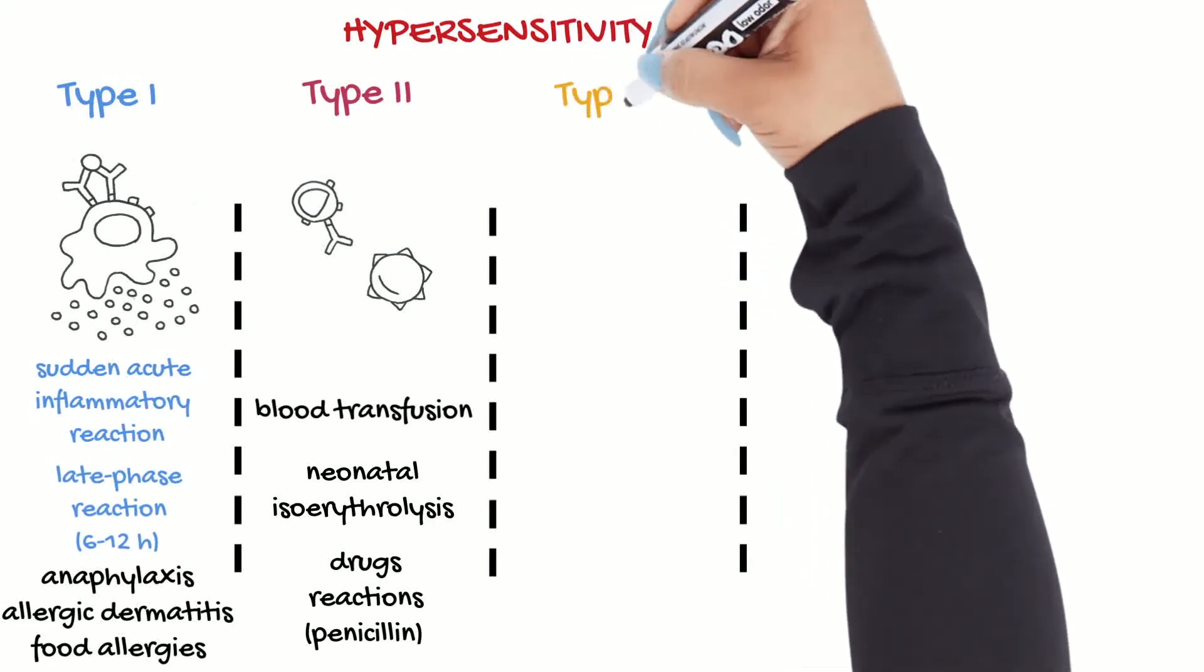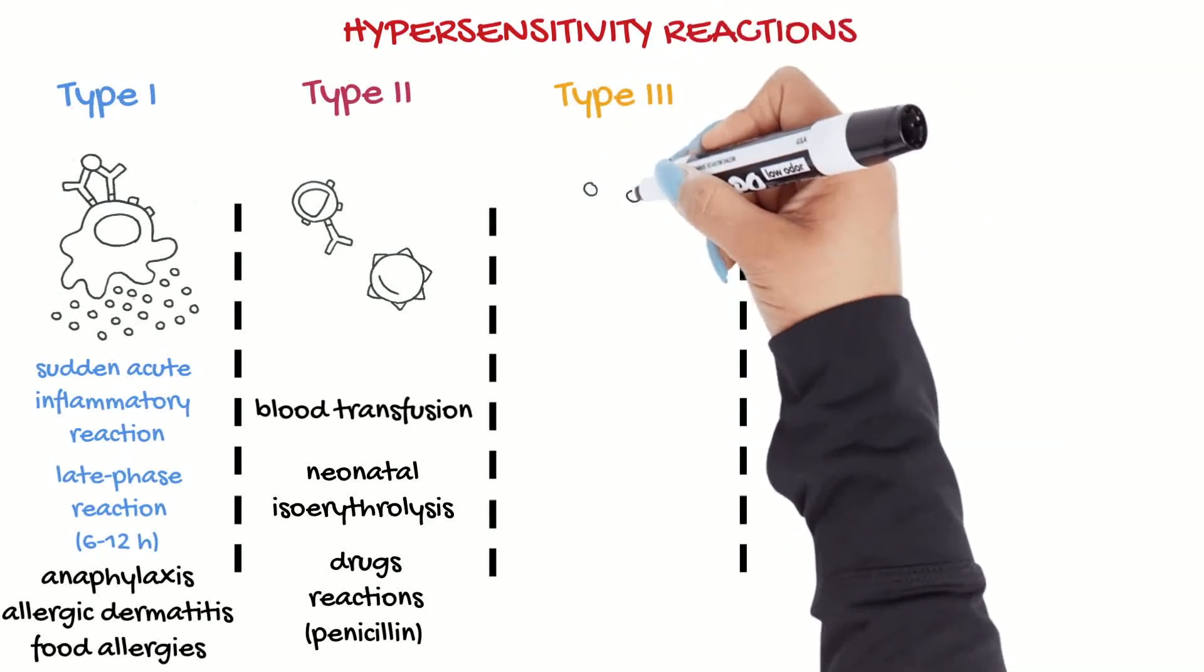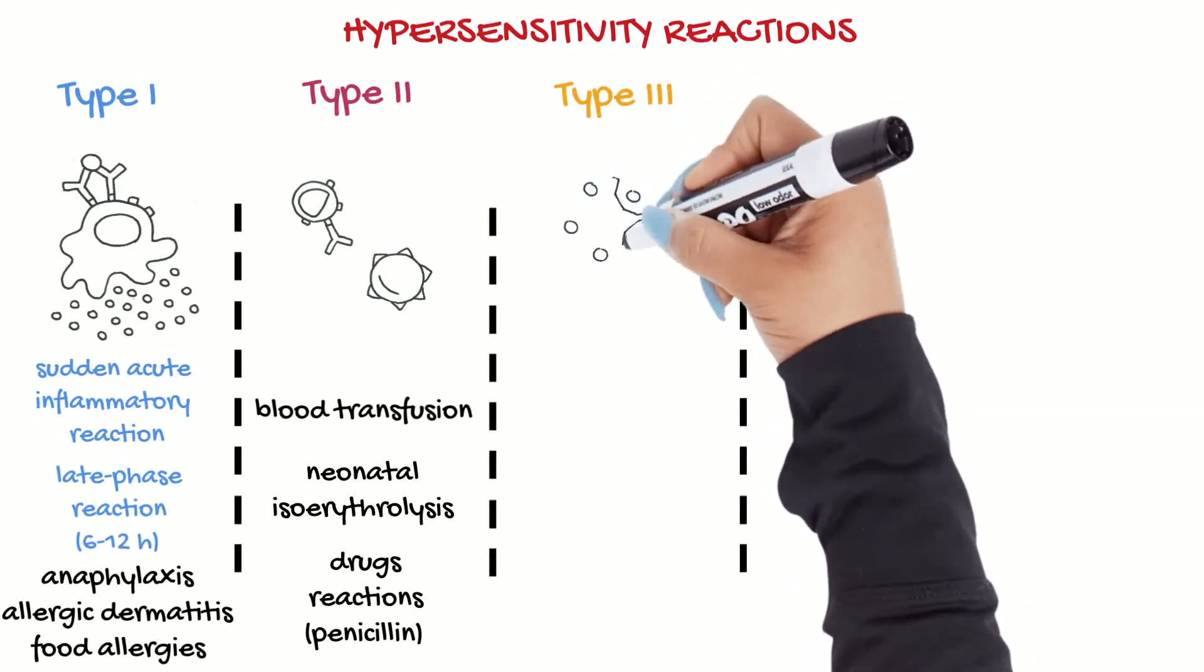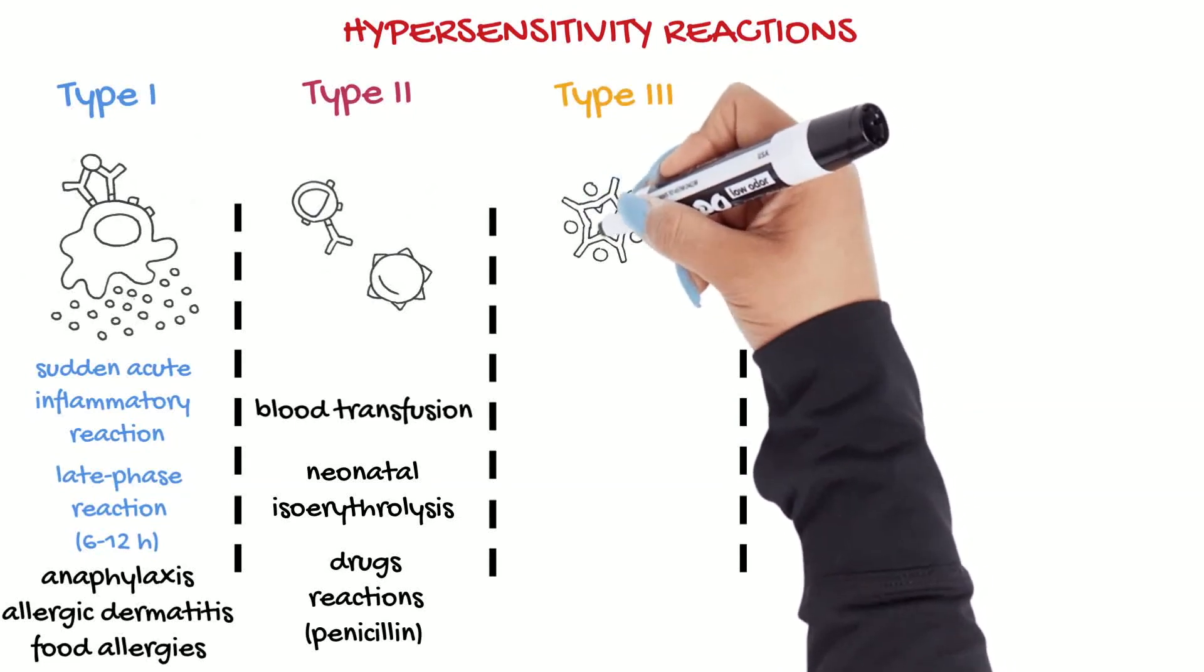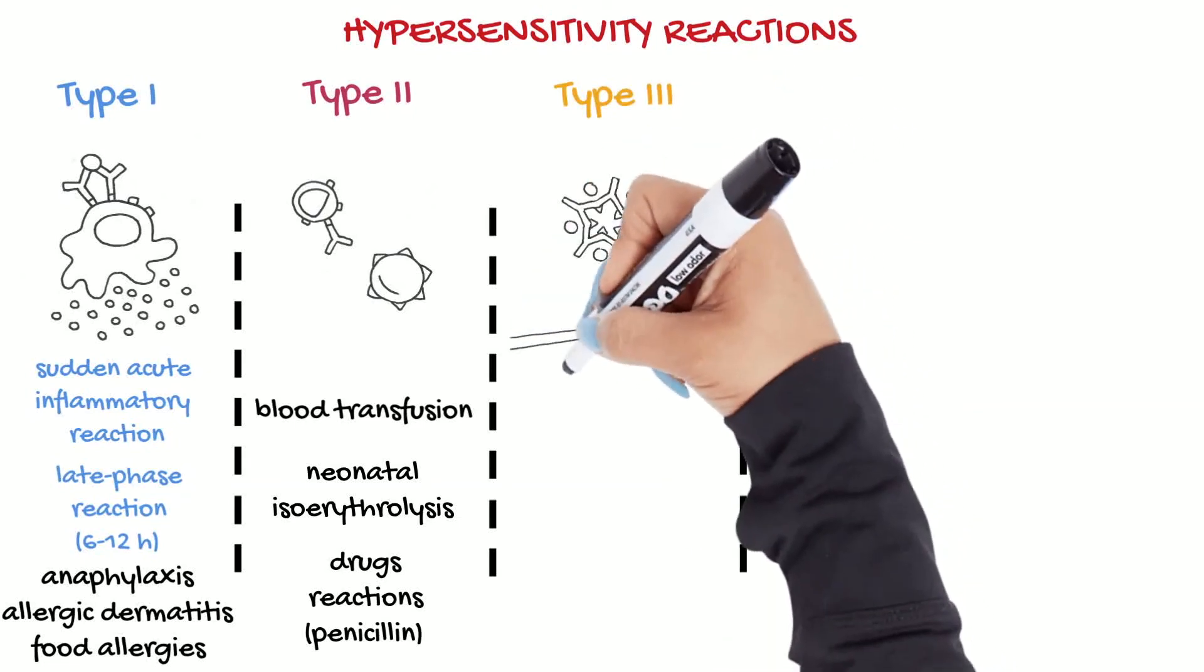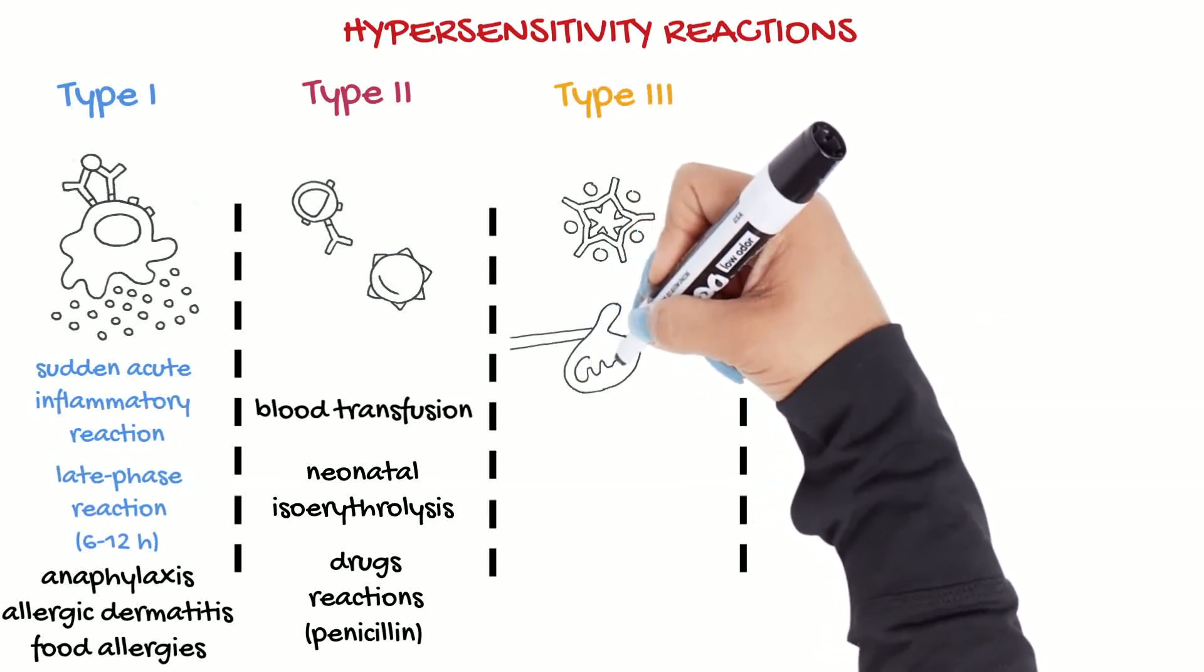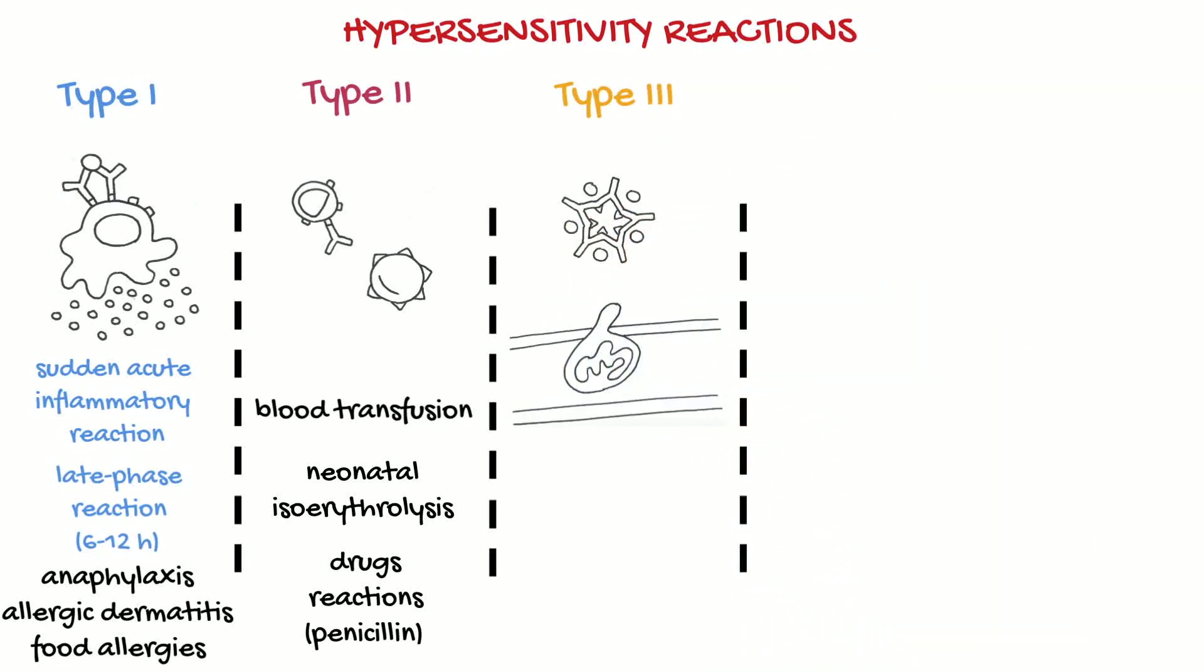Type 3 hypersensitivity reactions are those mediated by immune complexes that are formed by the combination of antibodies with antigens. When these immune complexes are deposited in tissues, the activated complement generates chemotactic peptides which attract neutrophils. The severity of the reactions depends on the amount, size, and deposition of the immune complexes.